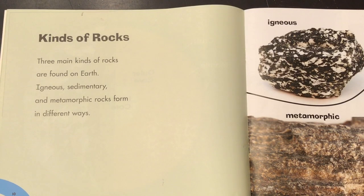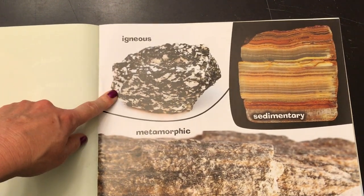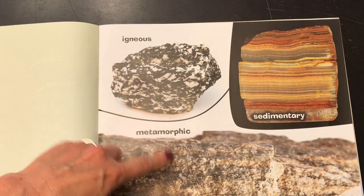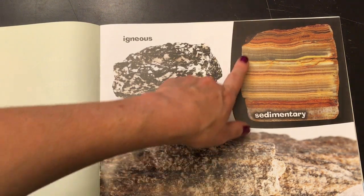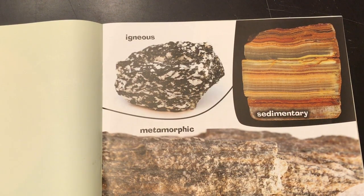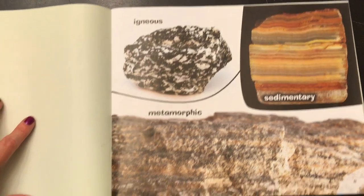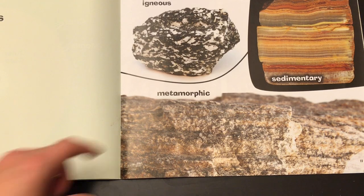Kinds of rocks: three main kinds of rocks are found on Earth. Igneous, sedimentary, and metamorphic rocks form in different ways. There's an example of an igneous rock, and you see the different colors in these rocks because rocks are made of multiple minerals together. Sedimentary — you can see the different layers of the rocks, different sediment that has been pressed down over many, many years. And then metamorphic, which has been pushed together from heat and pressure.